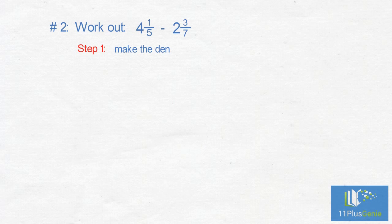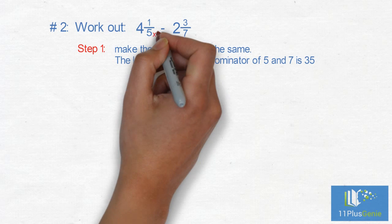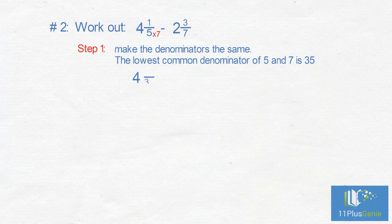Step 1: Make the denominators the same. The lowest common denominator of 5 and 7 is 35. We multiply 5 by 7 to get 35. What we do to the denominator, we must do to the numerator.